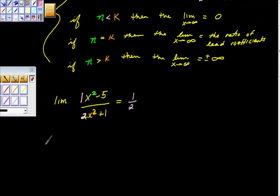Let's try this other example here. So what is the limit here of x squared minus 5 over 2x minus 5, as x approaches infinity?